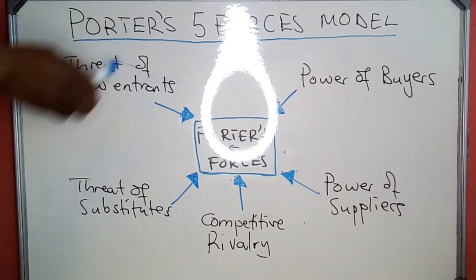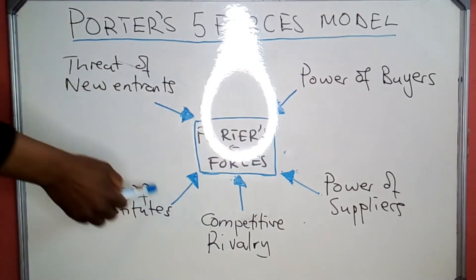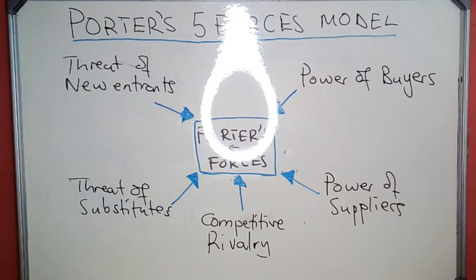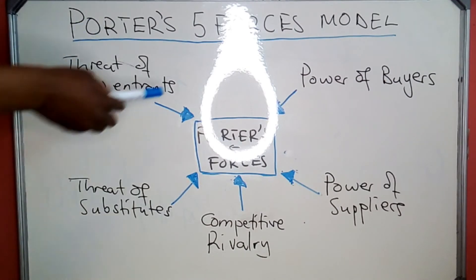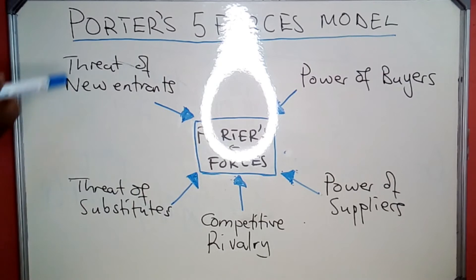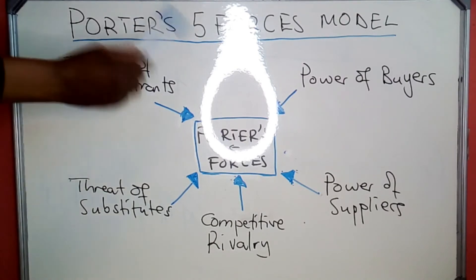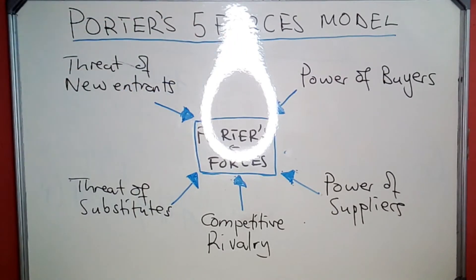The model states that a business has to know the impact these forces have on it in order to get ahead of competition. For example, looking at the power of buyers, buyers have impact on the business because they can choose to either buy or not to buy. The strength of demand for a particular product can position a business well — if more buyers demand its product over competitors', that business can be ahead of the competition.